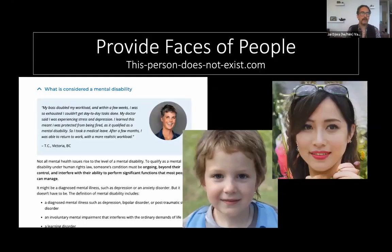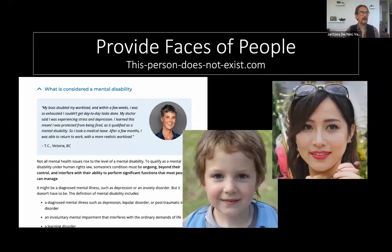One of the other things you can do is use faces of people. There's a site called thispersondoesnotexist.com — I'm going to drop a couple of links into the chat — and you can see the quality of this has really increased. One of my clients is using a picture like this to help clarify the human aspect of a particular legal issue on their website.